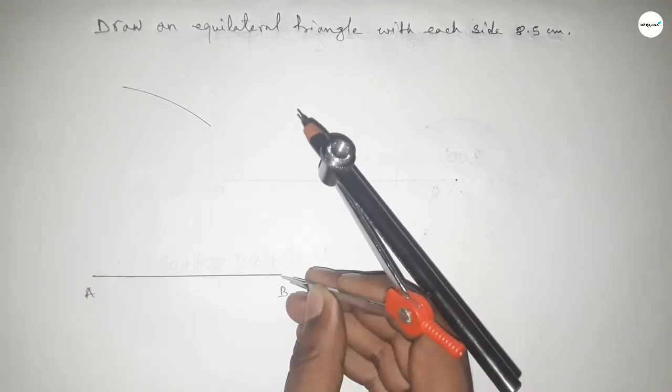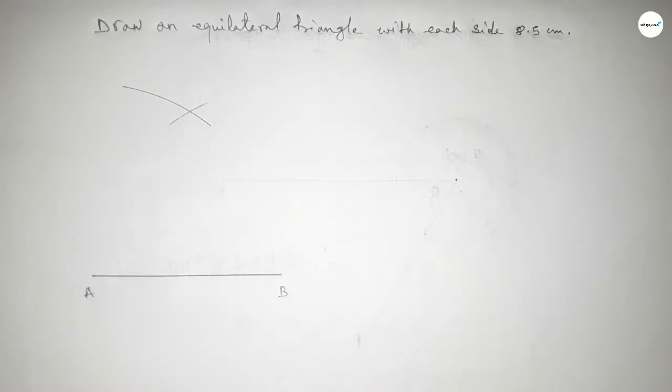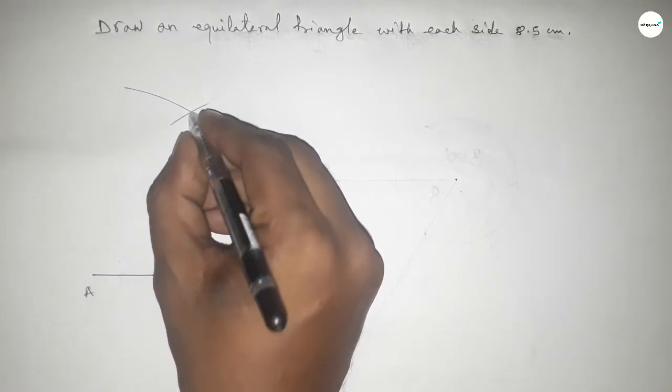With the same length, putting the compass here and cut here. So both the curves intersect at a point.